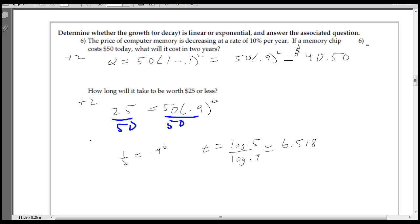On 6 here, this is a little different. Instead of growth, it's decay, it's decreasing. So instead of 1 plus r, it's 1 minus r. So it's very similar to start with 50, and then it decreases at 10% for two years, so 0.9 to the second ends up going down to $40.50.